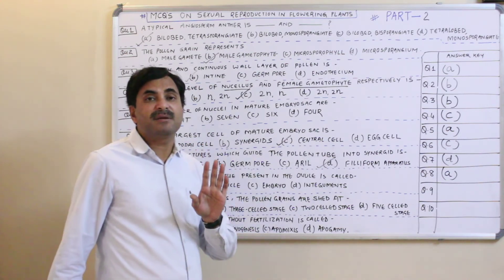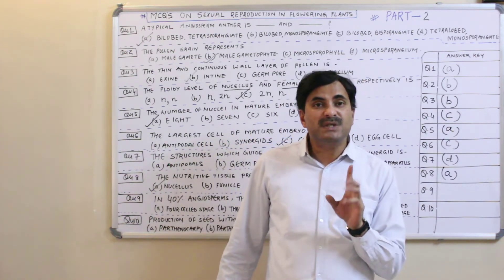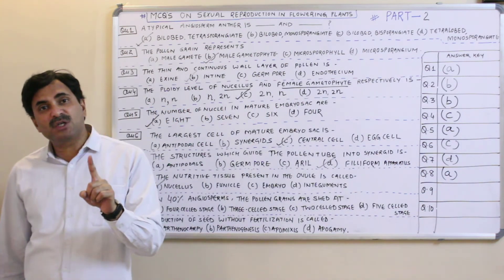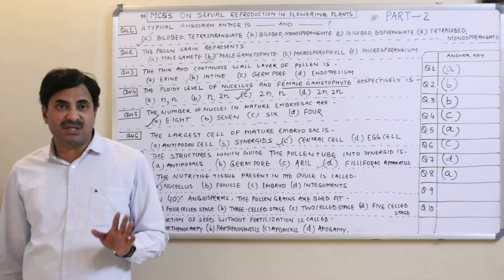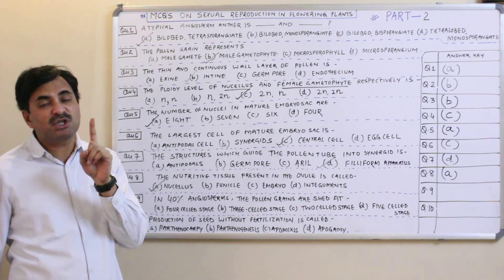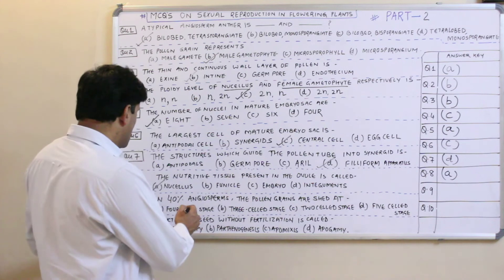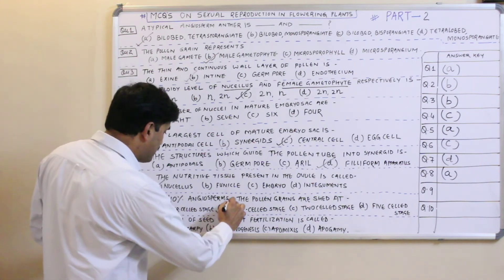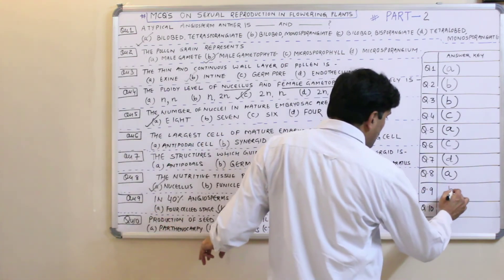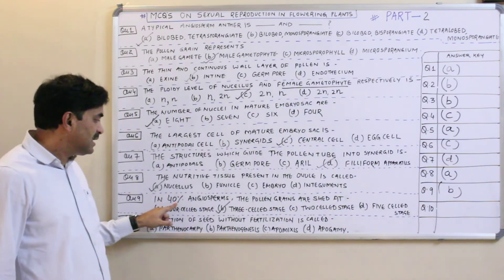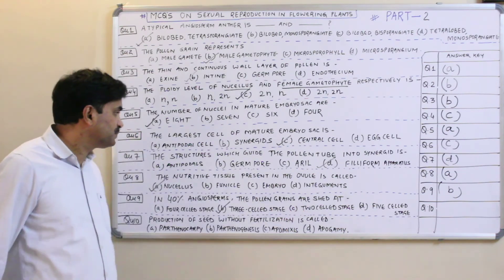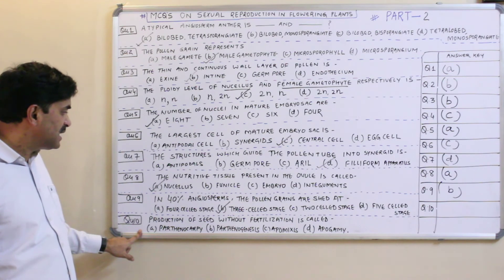Question number nine: in forty percent of angiosperms the pollen grain is shed at which stage? In sixty percent of angiosperms the pollen grain is shed at the two-cell stage, while in the remaining forty percent the pollen grain is shed from the anther at the three-cell stage. Since the question asks about forty percent, question number nine has the answer B — three-cell stage.